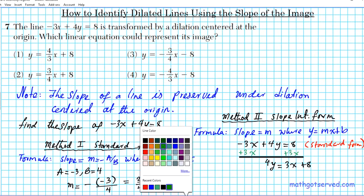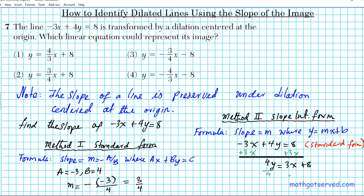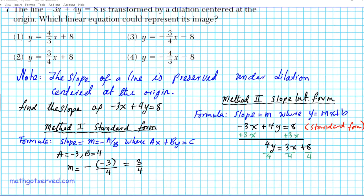If you add 3x to both sides, we have 4y equals 3x plus 8. Then divide every single term by 4. Our slope intercept form is y equals 3 over 4 x plus 2. The coefficient of x is your m, so the slope is 3 over 4.